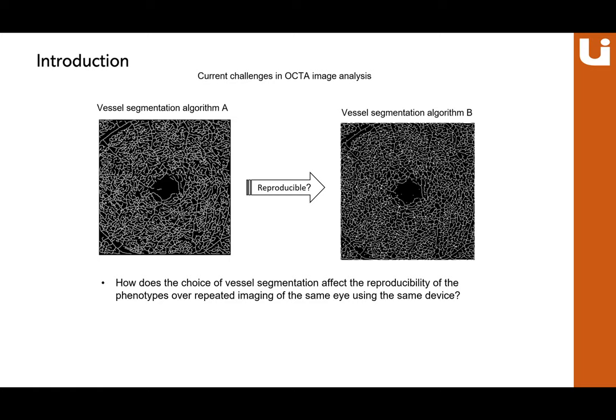Another problem is how vessel segmentation plays a role. Vessel segmentation is a key step in phenotype discovery, and a number of automated segmentation pipelines have been proposed — ranging from traditional vessel enhancement and thresholding approaches to more recent deep learning models. However, widely used retinal phenotypes are known to be sensitive to the choice of segmentation method, and we examine how consistent the new phenotypes are across segmentation methods.